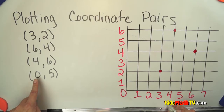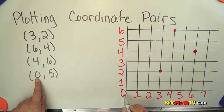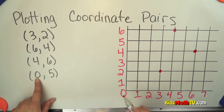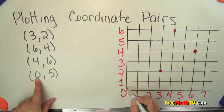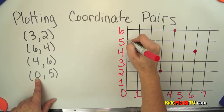Here's one with a zero. Zero means we stay on the y-axis and we go up to the five.